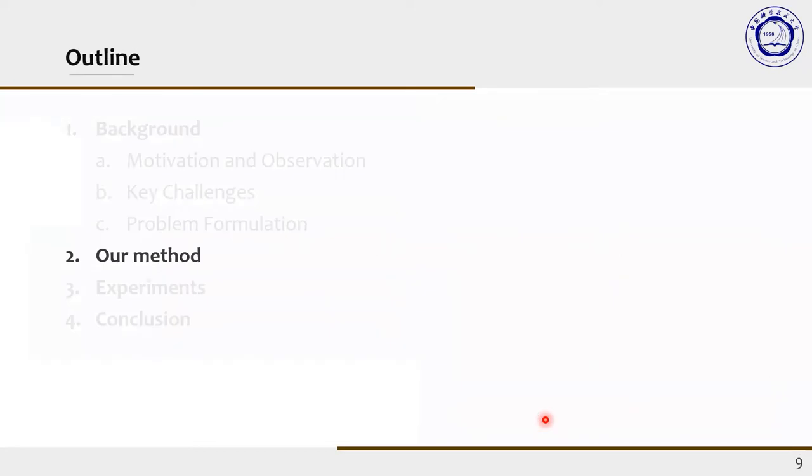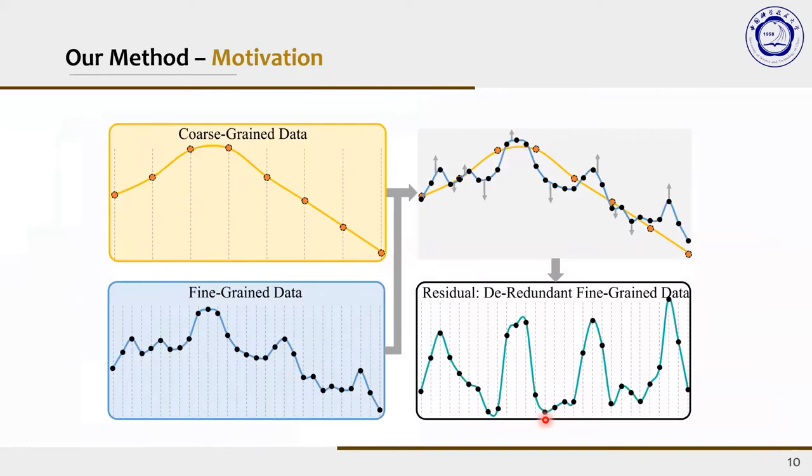Now we introduce our proposed method. In order to remove the redundancy and ensure that the input of each block is unique to a certain granularity, we introduce a novel residual design between each block. As shown in the figure, we take two granularities as an example. First, the coarse and fine-grained data are obtained from the real data. We observe that the change patterns of fine-grained data are dominated by the trending information of the coarse-grained data, making it difficult to be captured.